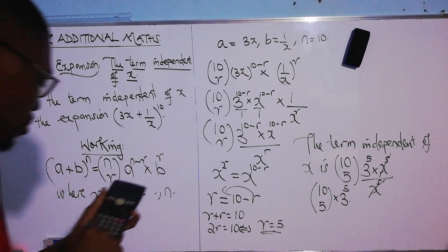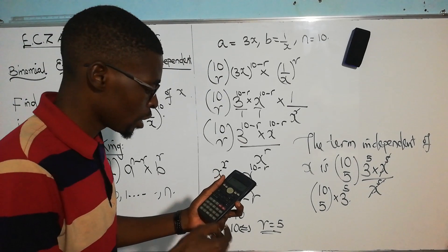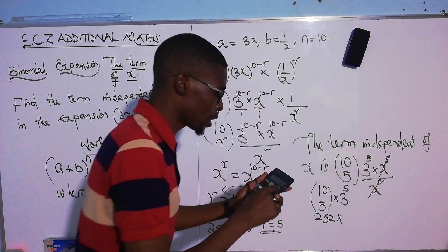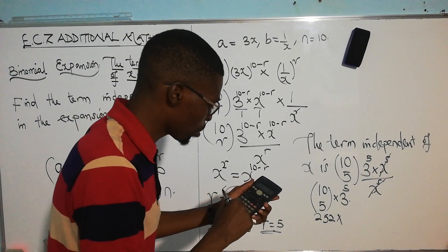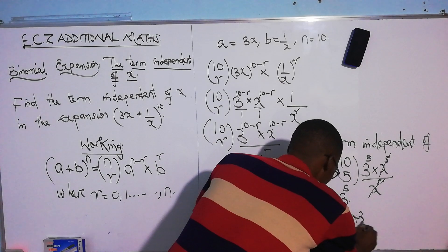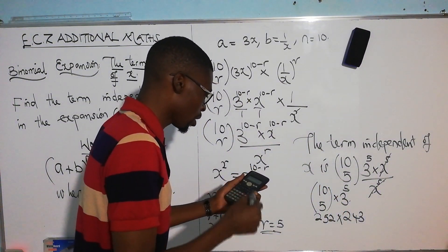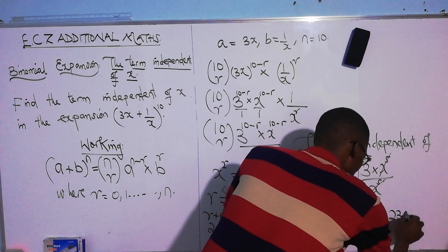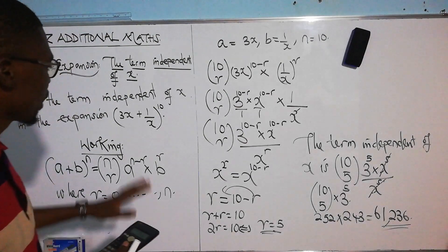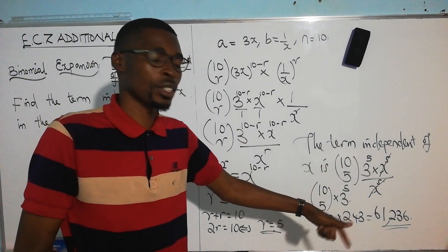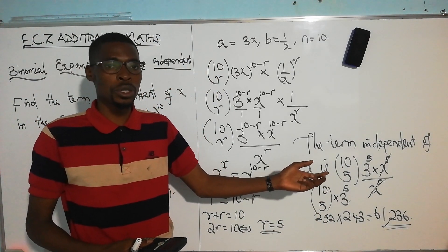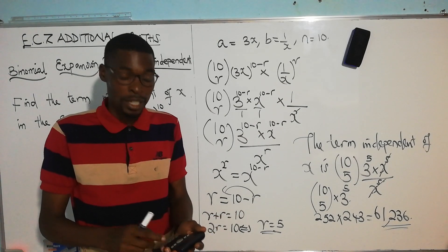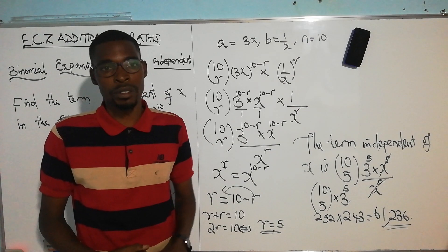Calculating: 10C5 equals 252, and 3 to the power 5 equals 243. So 252 times 243 gives 61,236. Therefore, the term independent of x in this expansion is 61,236. I hope you enjoyed the lesson and understood this concept fully, so that no matter how the question is phrased, you won't struggle to find the term independent of x.